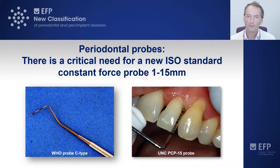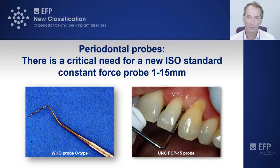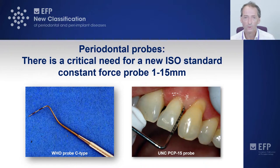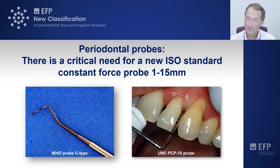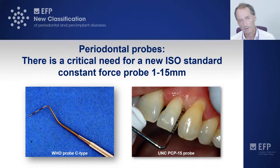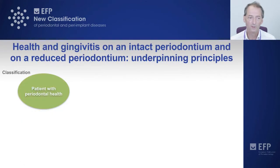Probing is a particular challenge, which is why gingivitis measured through bleeding on probing isn't as easy as you may think, because people probe with different pressures and normally probe too heavily. We classically say you should probe at 0.25 newtons or 25 grams of weight around teeth, and even lighter pressures around implants — 0.2 newtons or 20 grams maximum. The problem is we don't have an ISO standard constant force probe, and our group felt this needed to be developed so that practitioners around the world apply the same pressure when distinguishing health from gingivitis from periodontitis. That was a key recommendation from the group.